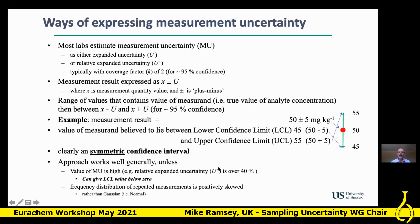This approach starts to break down when measurement uncertainty is high — typically when expanded uncertainty is over 40%. It can give rise to lower confidence limits that are below zero, as was mentioned in the earlier talk, and it doesn't work well when the frequency distribution of repeated measurements has an extreme positive skew — that is, when we're no longer dealing with normal distributions.